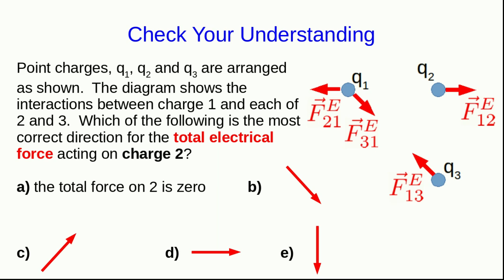Charges 1 and 2 are repelling each other, so they must have the same sign of charge. We don't know whether it's positive or negative, but we know it's the same sign. And 1 and 3 are attracting each other, so they must have opposite charges. That means 2 and 3 must have opposite charges, so they must be attracting each other.